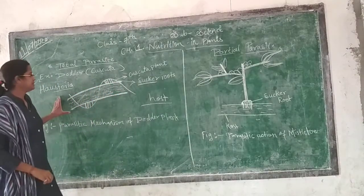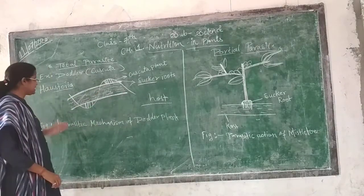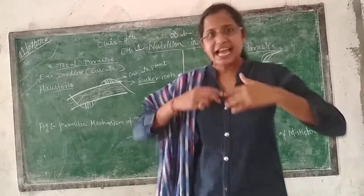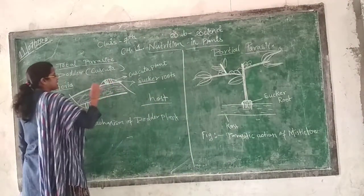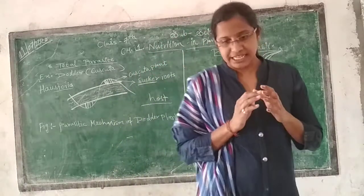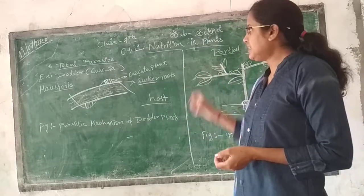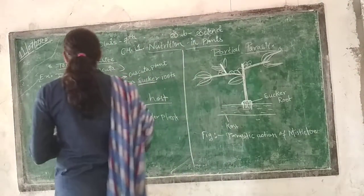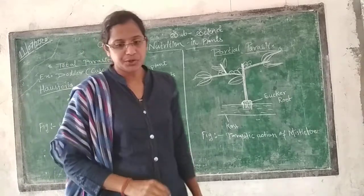This is the host plant, around which the parasitic plant has coiled itself. It has developed some roots, and these roots are called suckers. These sucker roots are called haustoria.